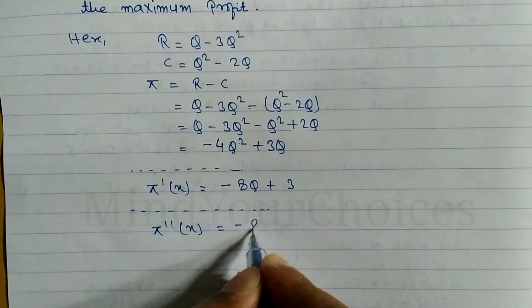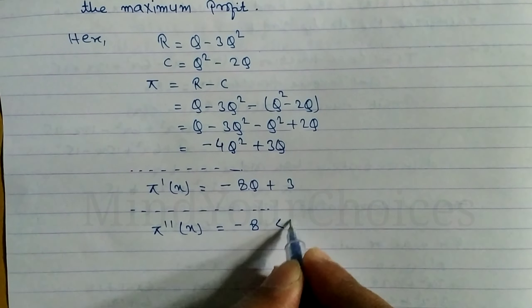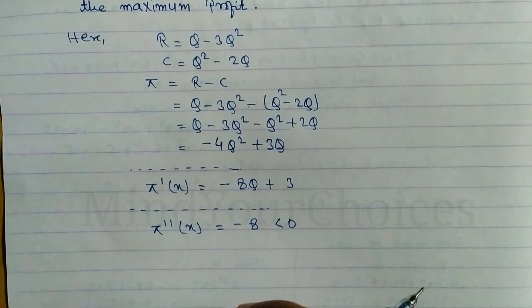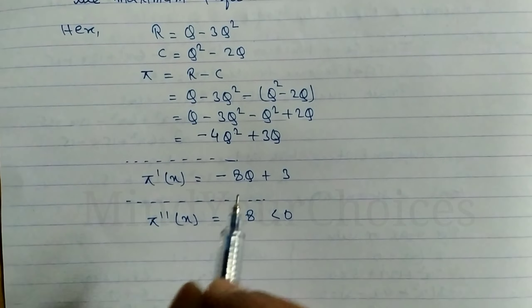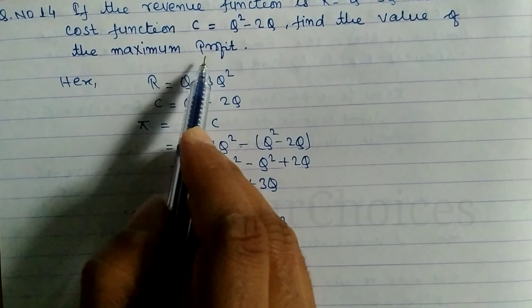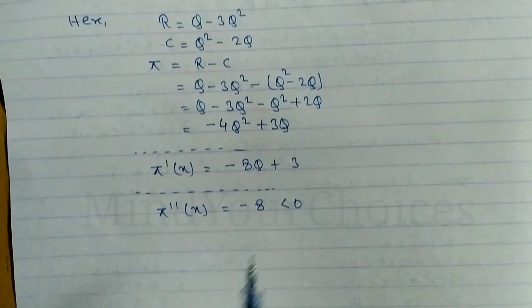Less than 0, it means profit is maximum. What kind of profit is it?